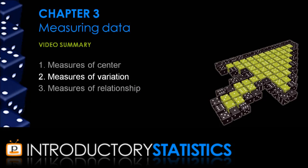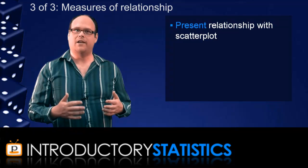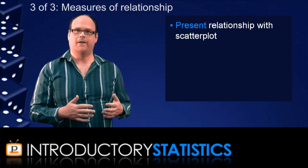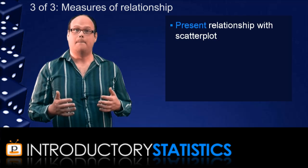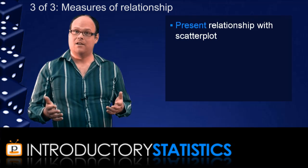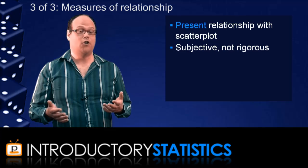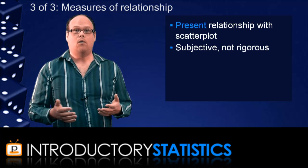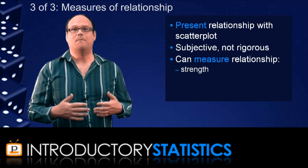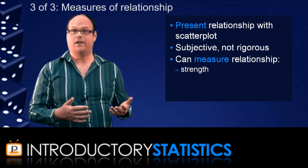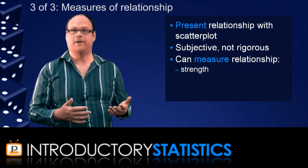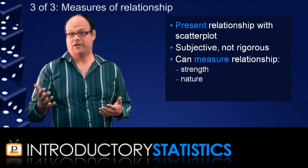We've looked at measuring the center and variation in a set of data for one variable. Now, let's turn our attention to data for two variables, and measuring the relationship between such variables. Recall that the way we present the relationship between two numerical variables is through a scatter plot, but, like with data for one variable, such a presentation can be subjective and not particularly rigorous. What we'll do here is show a way of measuring the strength of any linear relationship between two numerical variables, and also measuring the nature of that relationship.